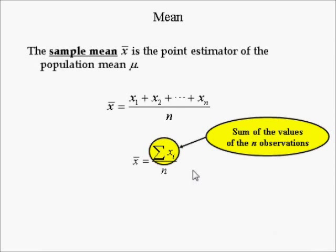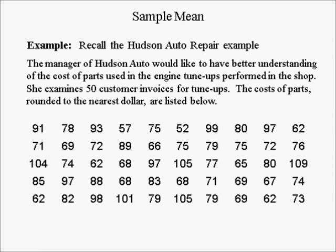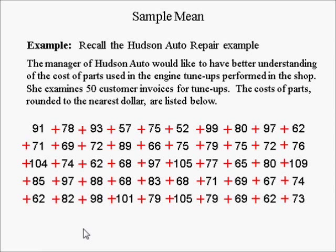Big sigma next to X_i means we sum up all n observations of variable X. The most common numerical descriptive statistic is the sample mean. In our Hudson Auto Repair example, the sample mean is found by summing all 50 observations of tune-up parts cost. The sum equals $3,949. Dividing by the sample size of 50 yields a sample mean of $78.98.